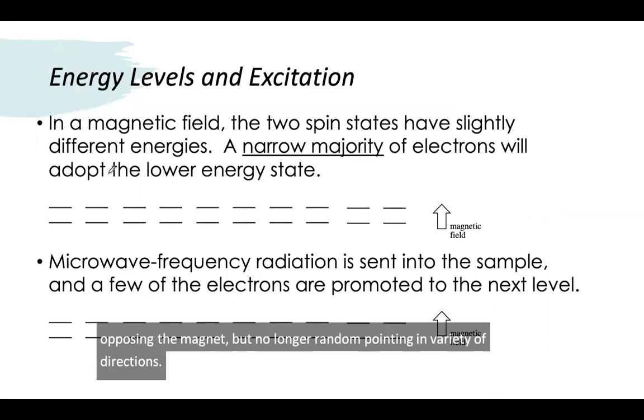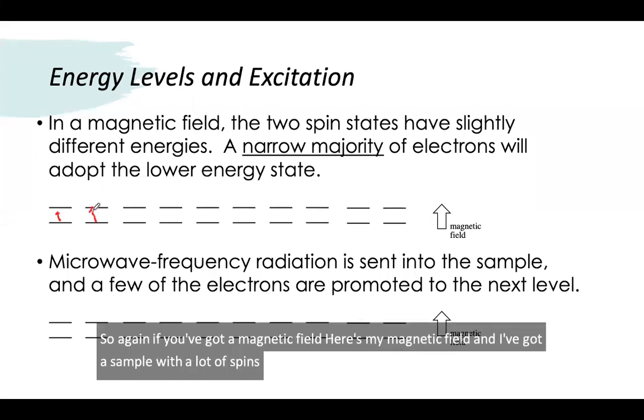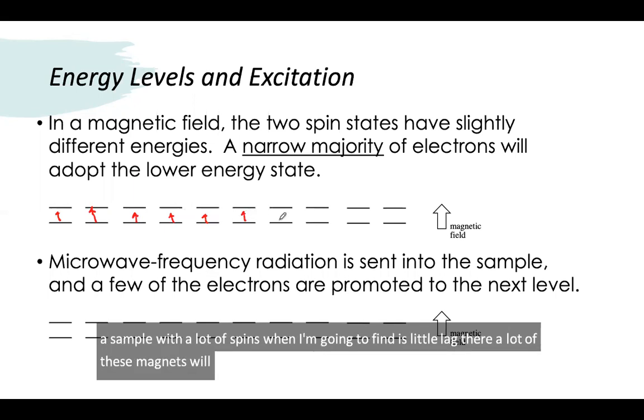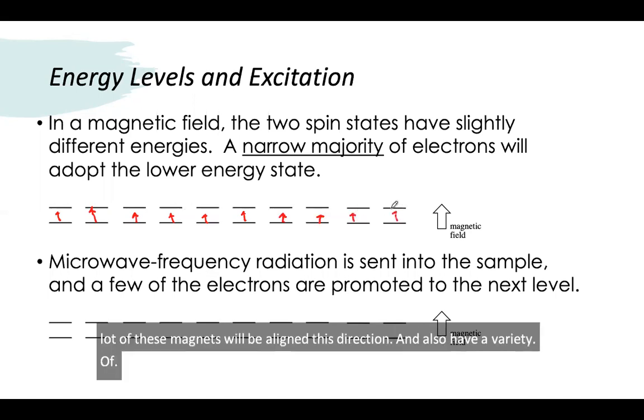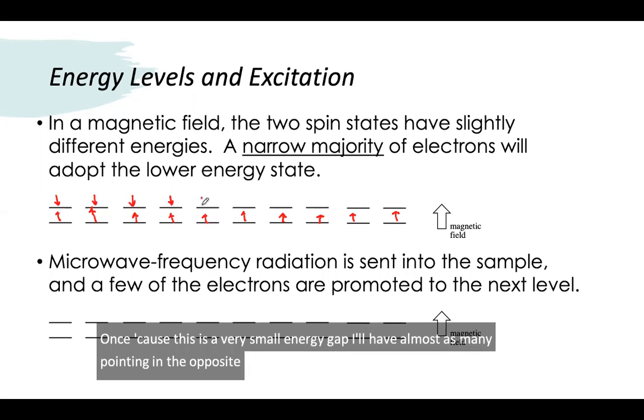So again, if you've got a magnetic field—here's my magnetic field—and I've got a sample with a lot of spins, what I'm going to find is a lot of these magnets will be aligned this direction. And I'll also have a variety of ones because this is a very small energy gap. I'll have almost as many pointing in the opposite direction.